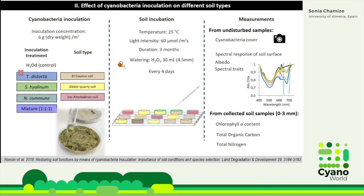After three months, we measured different variables in the soil to assess cyanobacteria performance and growth. We took pictures of the samples to measure cyanobacterial cover. We also measured the reflectance of the soil, and from this data we calculated different indices to evaluate cyanobacterial growth — for example, the albedo or the spectral absorption due to chlorophyll. We also collected samples to analyze chlorophyll A content, organic carbon, and nitrogen content.